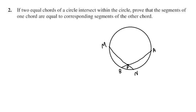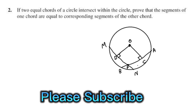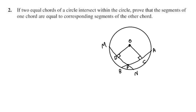The center is O. I draw a perpendicular from center O to chord MN, meeting at point D, and a perpendicular from center O to chord AB, meeting at point C. I will join O and P. Now we have two triangles here: triangle DOP and triangle COP. We will prove MP equals AP and PN equals PB.